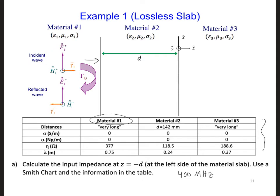For material 1, 2, and 3, we have d, the thickness of material 2. And sigma, in this case, the slab is lossless, so sigma and alpha are 0. But you're given eta for all three materials and also the wavelength.